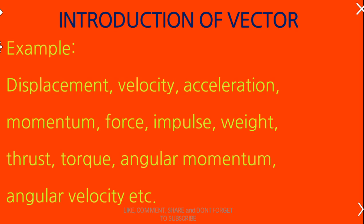What is displacement? The change in position gives the displacement. What is velocity? Change in position by time gives the velocity. What is acceleration? Change in velocity by time gives acceleration. What is momentum? Mass into velocity. What is force? Mass into acceleration. What is impulse? Force into time. What is weight? Mass into gravity. What is thrust? It is liquid pressure. What is torque? It is rotational force. What is angular momentum? It is rotational momentum. Angular velocity is rotational velocity. All these are examples of vector quantities.